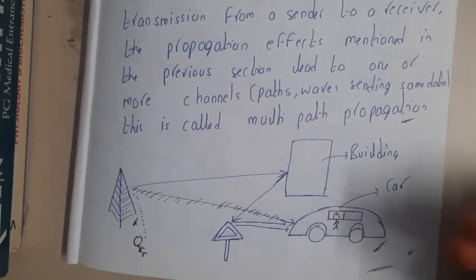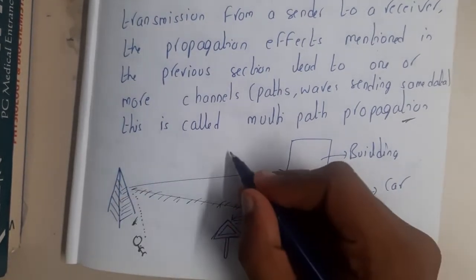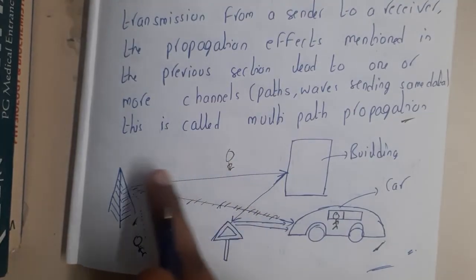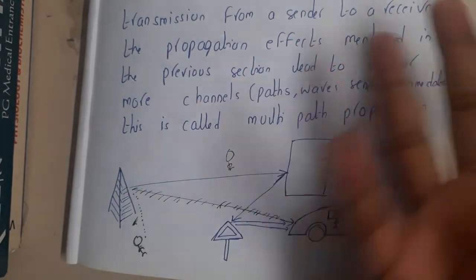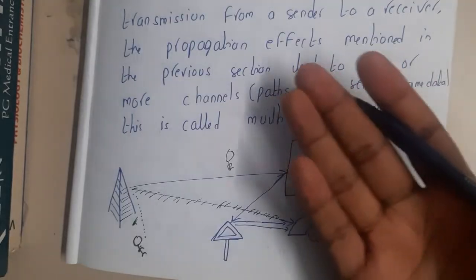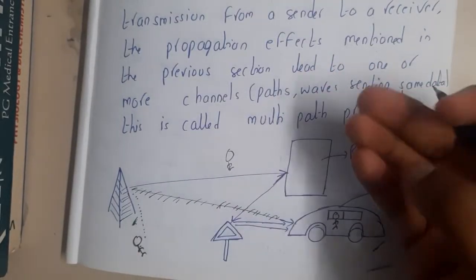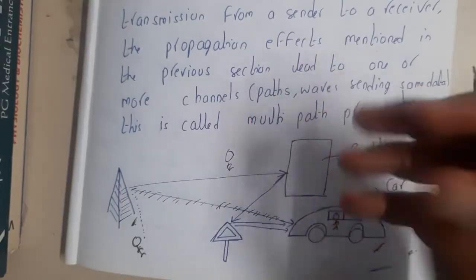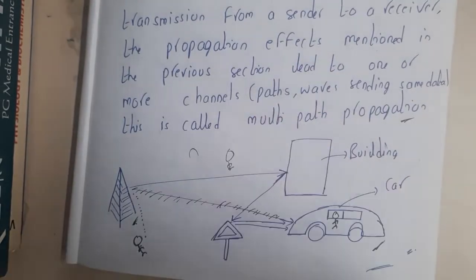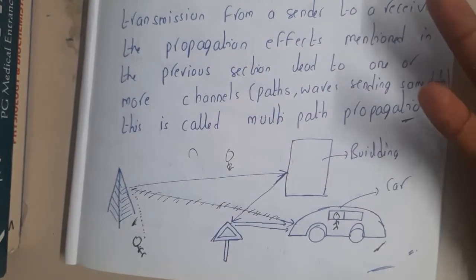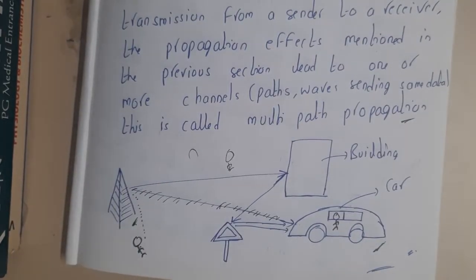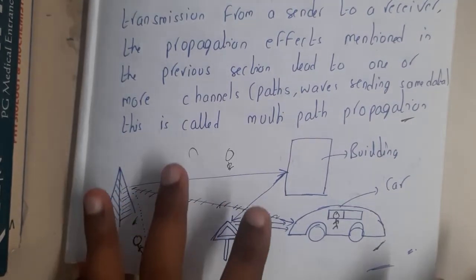Some say this is a problem, but consider your radio — signals get reflected by multiple things, and your radio still receives them without repeating or giving double sounds. So it doesn't necessarily cause issues in practice. Multipath propagation is more of a concept than strictly a problem.